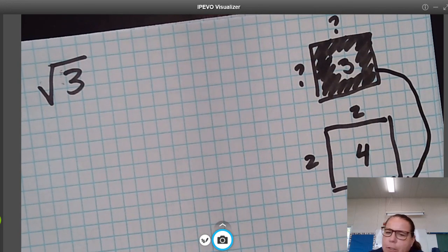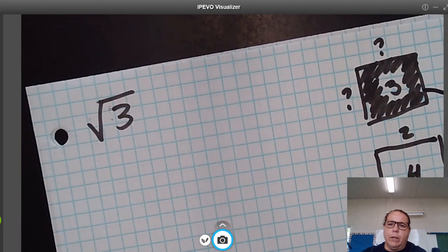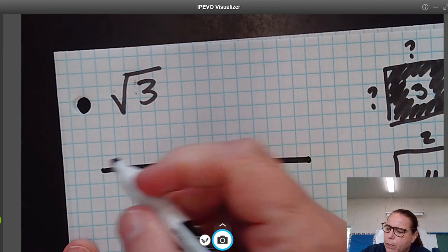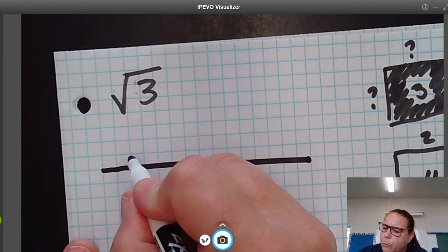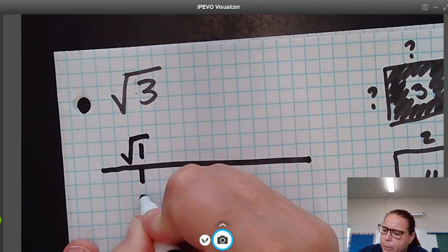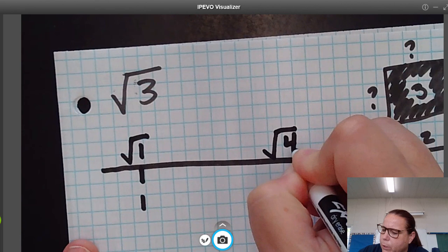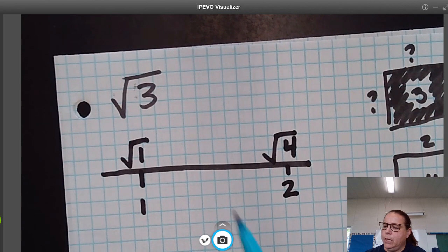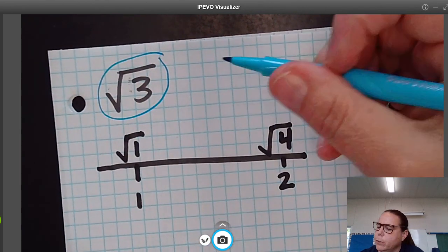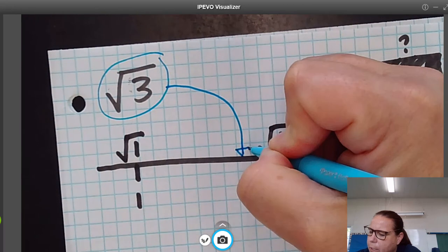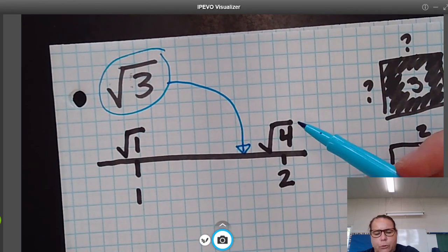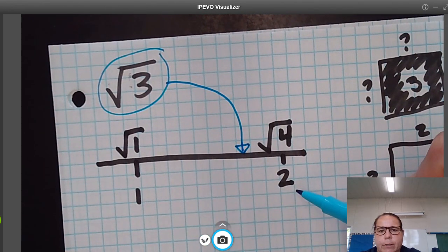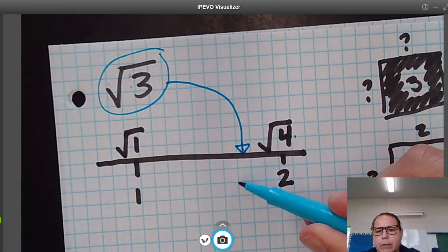The first step, the main step that we really need to think about is what are some perfect square roots. We know that the perfect square root of 1 is 1, and the perfect square root of 4 is 2. The square root of 3 is between what two perfect roots? We can see that it is between the square root of 1 and the square root of 4, which means it's between 1 and 2.